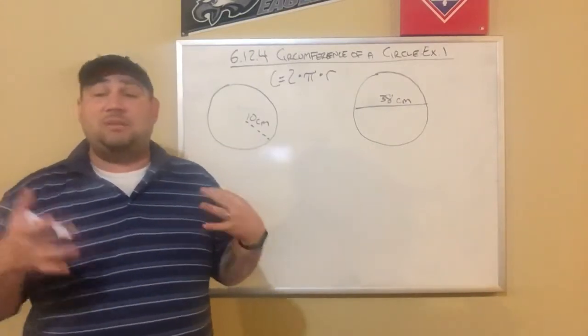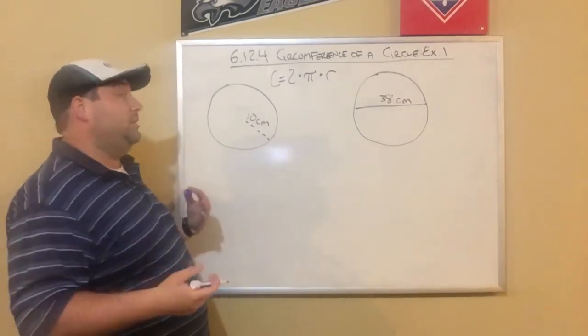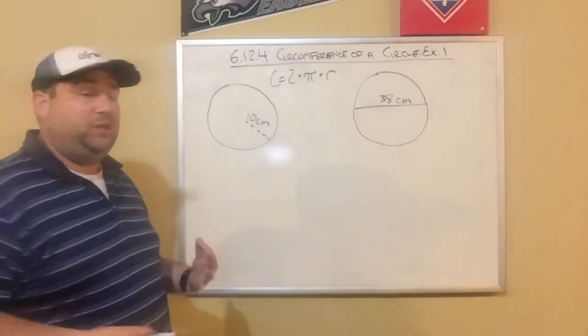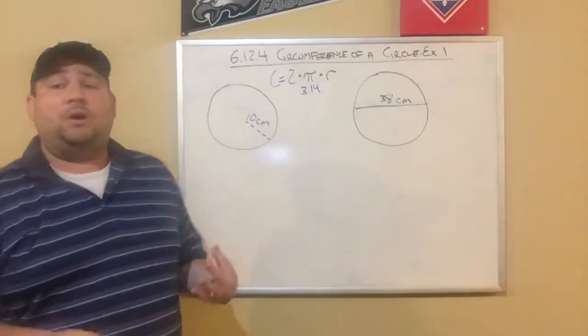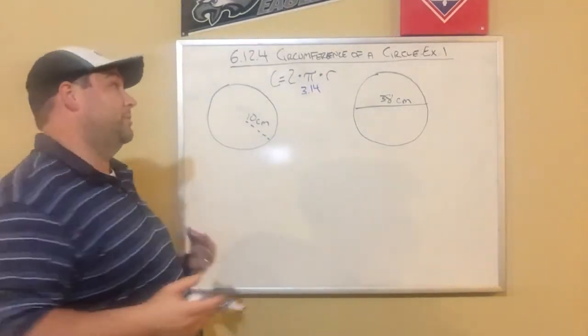159 and so on. That number goes on and on and on. We're just going to use 3.14. So pi and 3.14 are going to be the same thing for our purposes.